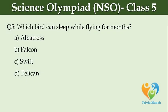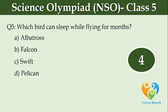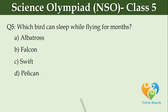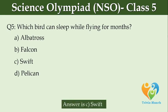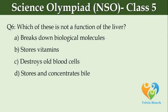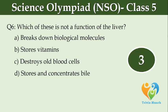Which bird can sleep while flying for months? Option A: albatross. Option B: falcon. Option C: swift. Option D: falcon. Which of these is not a function of the liver? Option A: breakdown biological molecules. Option B: stores vitamins. Option C: destroys old blood cells. Option D: stores and concentrates bile.